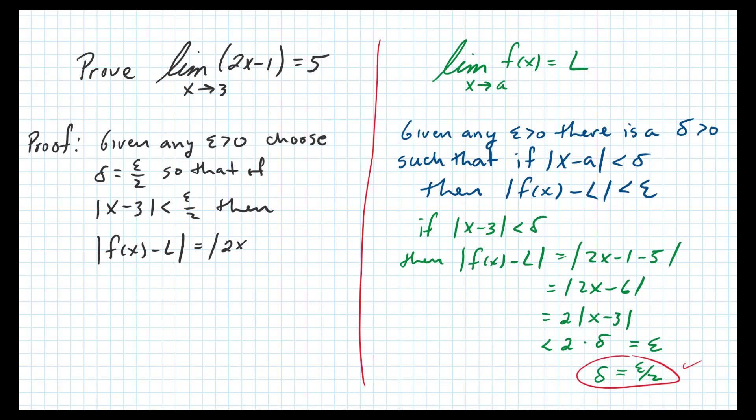All right, so f(x), which is 2x minus 1, minus the L, comes out to 2x minus 6. Factoring out the 2, we get x minus 3. Okay, notice these are all straight equals so far.